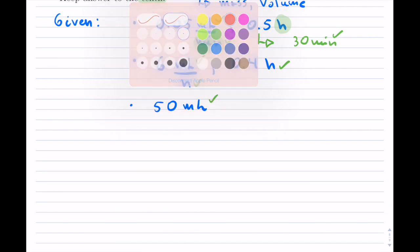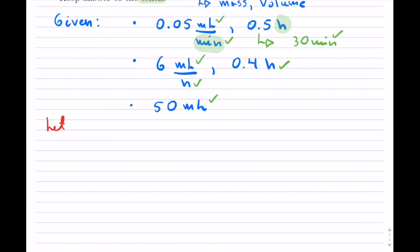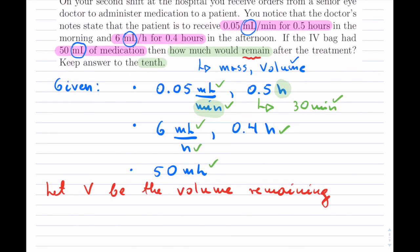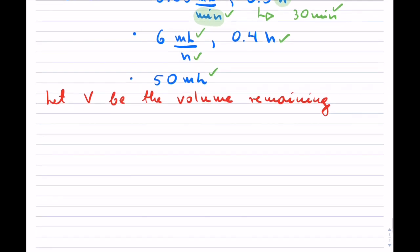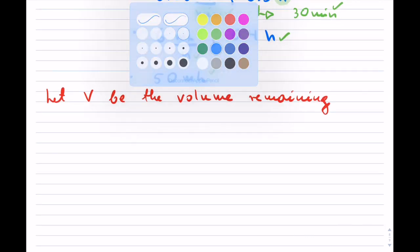Let's write our statement, so let V be the volume remaining. So, this is what they want, how much would remain, and now writing this down.